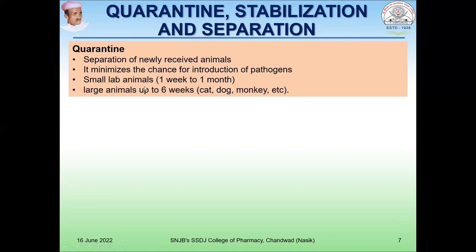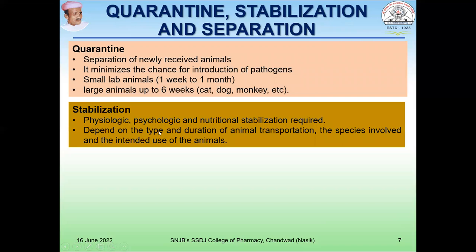Under small animals, rats and mice are considered. After quarantine, stabilization is also required. Stabilization involves the physiological, psychological, and nutritional stabilization of the animal, because when animals are procured from another environment, their stability is disturbed. The animal should be physiologically and psychologically stable. Stabilization depends on the type and duration of animal transportation, the species involved, and the intended use of the animal.